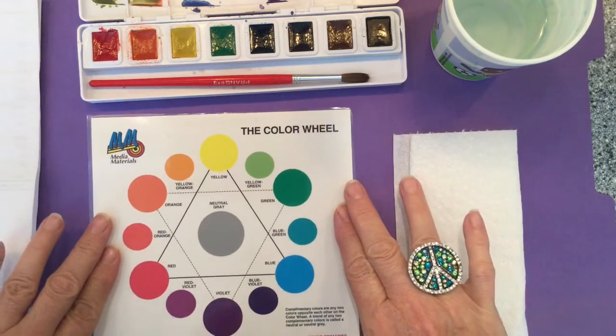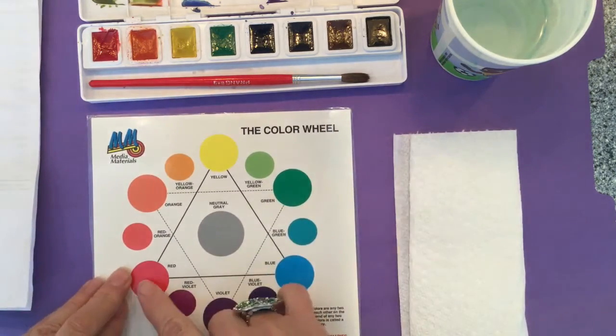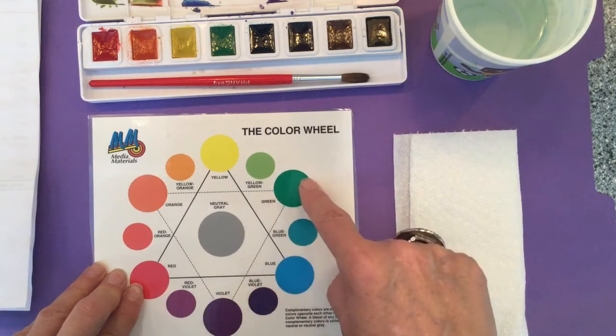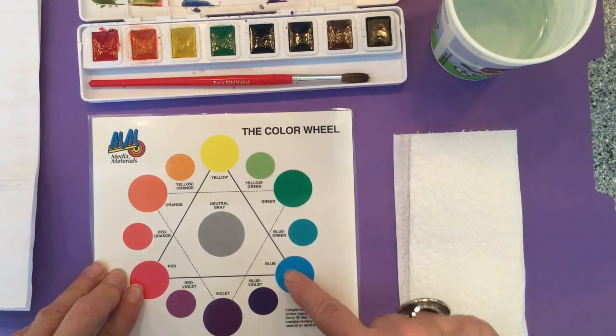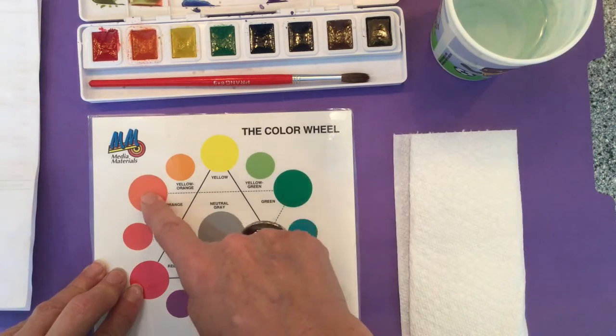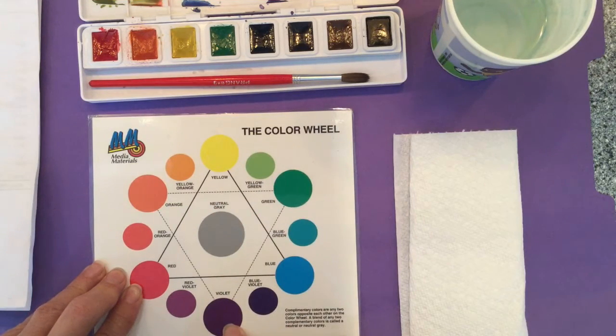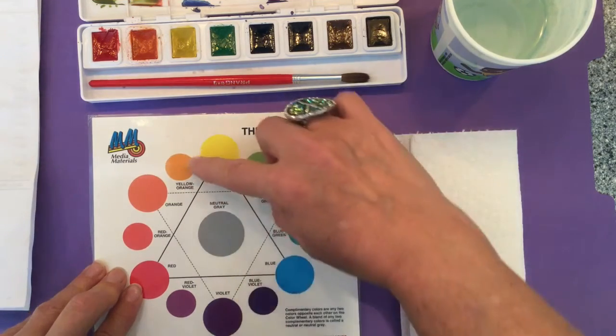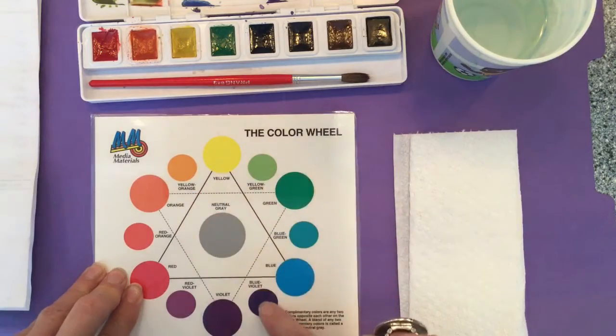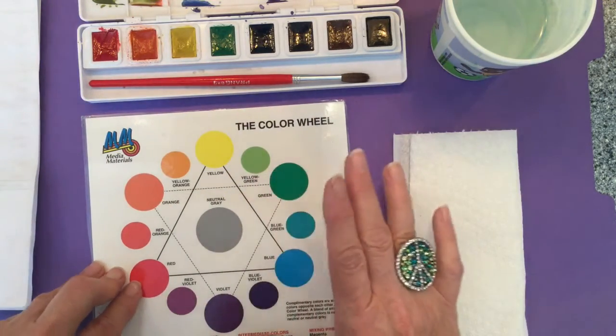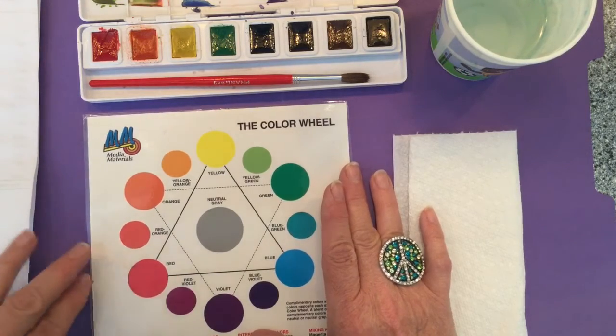This is a color wheel and if you go from red all the way across to green these are called complementary colors. So the complement of blue is orange, the complement to yellow is violet or purple, and even the tertiaries yellow orange and blue violet. These are all complementary colors but we're going to stick to the primaries and secondaries for this lesson.